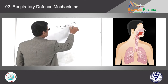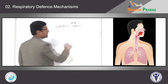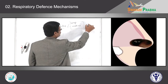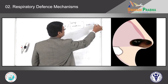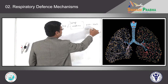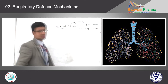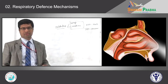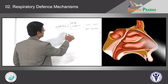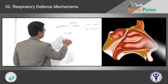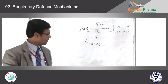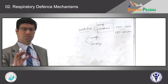Large and medium-sized particles predominantly get trapped in the nose by nasal hair structures, and also in the tracheobronchial tree with mucus. Once these particles are trapped, they have to be thrown out of the body. You will have a cough reflex and also sneezing, and these particles will be thrown out.